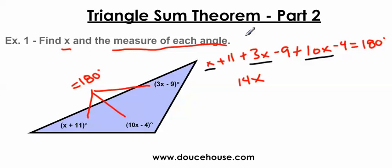Let me combine all the numbers now. 11 minus 9 is 2. 2 minus 4 is negative 2. And all of this equals 180.